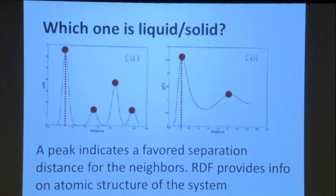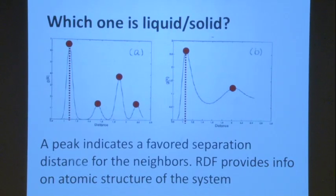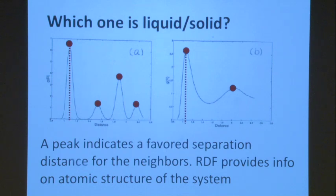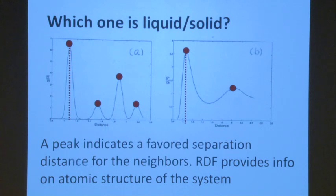Once you have a trajectory, you can also look at structural information — for example, phase changes. On the left you see a solid, on the right a liquid. Think about ice and water: as you increase the temperature, you get to the liquid phase. The peaks on the left are very distinct, showing the solid structure and the distances between hydrogen and oxygen atoms. Once in the liquid phase, the structure changes. So if you're interested in materials, or nanoparticles at high temperature with melting or phase change, this is another tool to use.